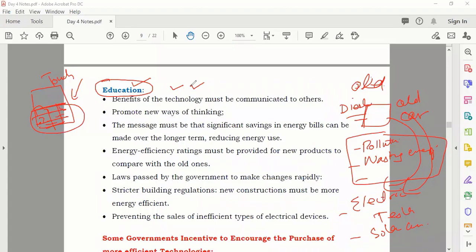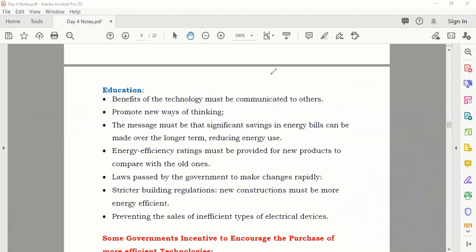If you educate your people, they can think positive and they will try to save energy. They will be more familiar with new technology. You have to communicate your people, educate your people. Number two: promote new ways of thinking. The message must be that significant savings in energy bills can be made over the longer term, reducing energy.